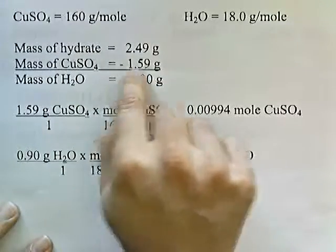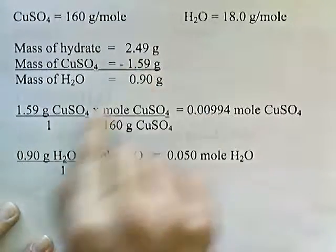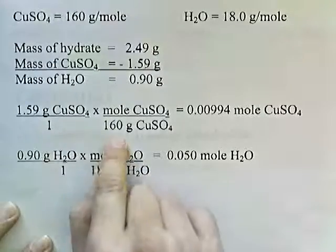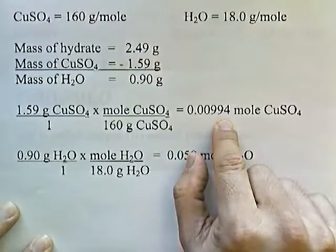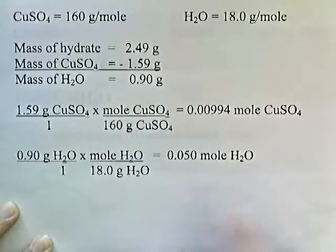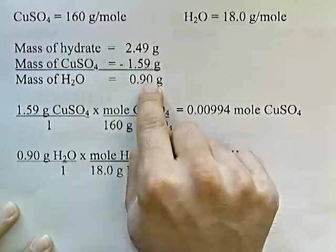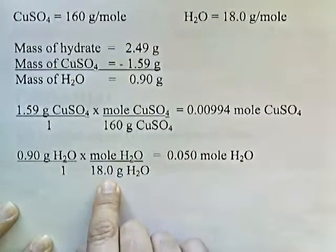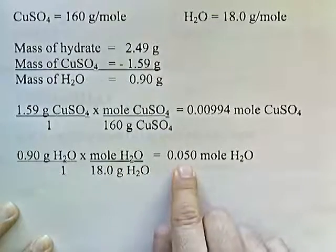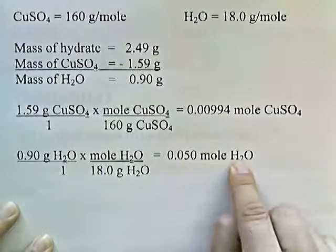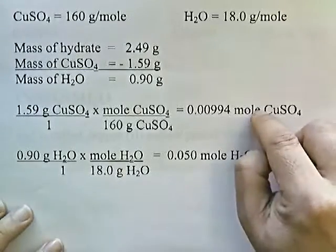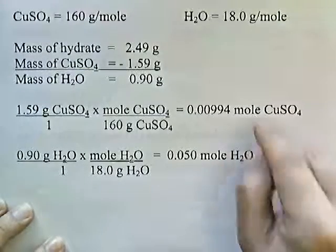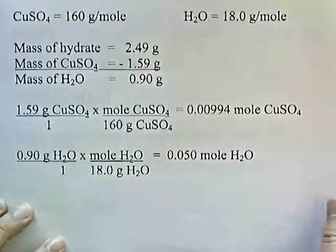So here we go. 1.59 grams of the copper sulfate divided by 160 gives me 0.00994 moles of copper sulfate. And then 0.9 grams of water divided by 18 gives us 0.050 moles of water. So that's how many moles of copper sulfate and moles of water are in the hydrate crystal sample.